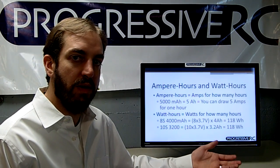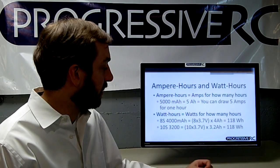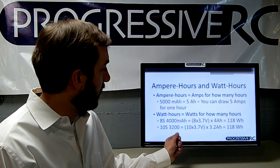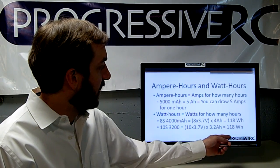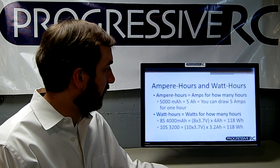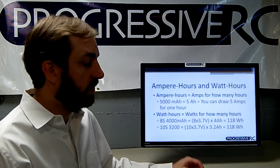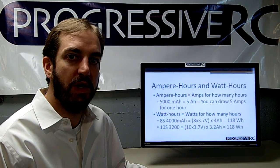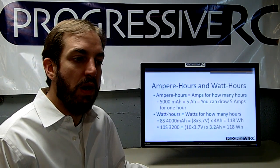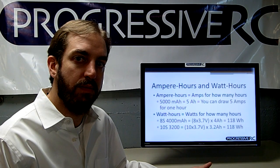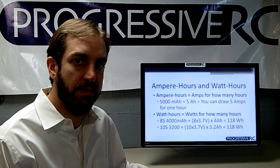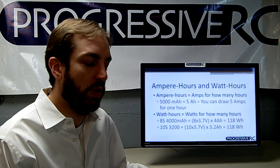If you then went to a higher voltage pack, like a 10S pack, we see that decreasing to 3200 mAh still gives you a total energy of 118 watt hours. So in this situation we've traded higher voltage for lower capacity and still have the same amount of energy available. Often by running a higher voltage setup you can reduce energy losses associated with high current draws and the resistance in the system.